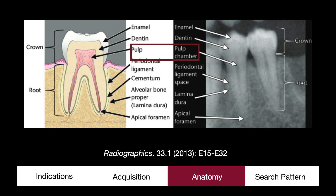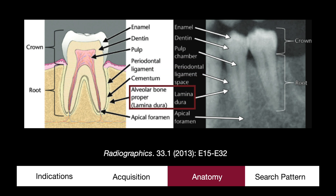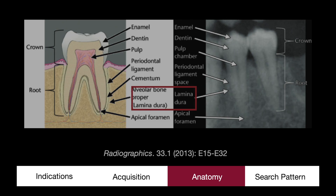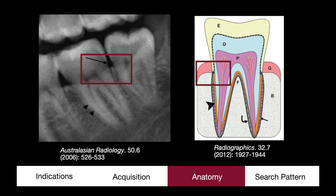The pulp chamber is the most radiolucent structure and contains the neurovascular elements — this is why root canal procedures are so painful. The neurovascular elements exit through the apical foramen, a small opening at the root's apex. The roots are covered by periodontal ligaments, which hold the teeth in their sockets — a thin radiolucent layer between the surface of the root and the lamina dura, the lining of the tooth socket. The cemento-enamel junction divides the visible crown and deeper root structures.